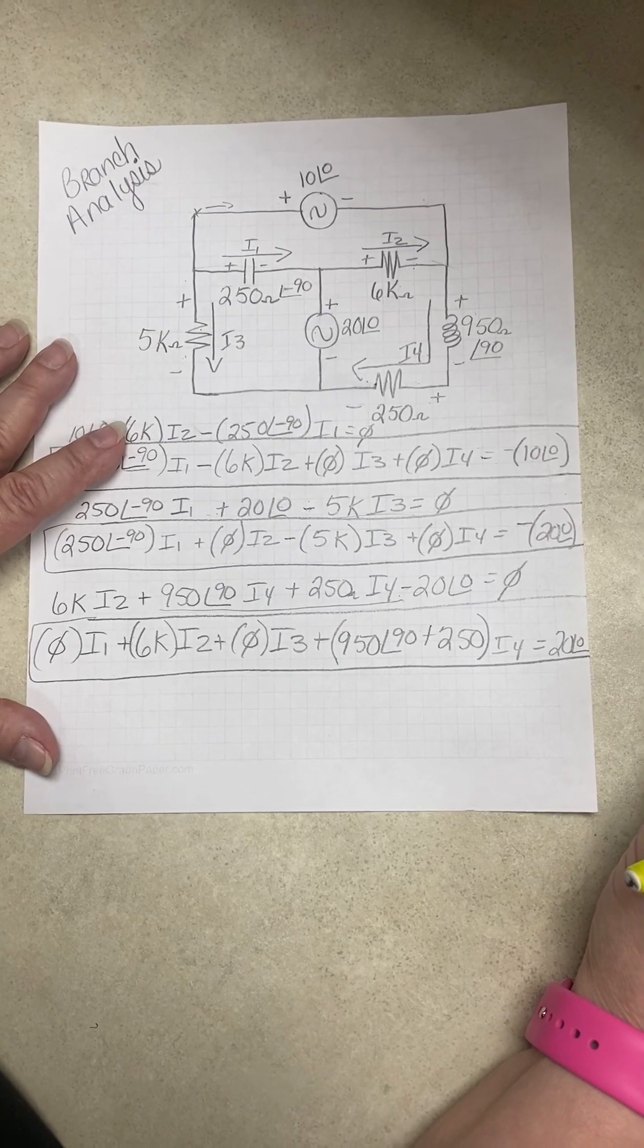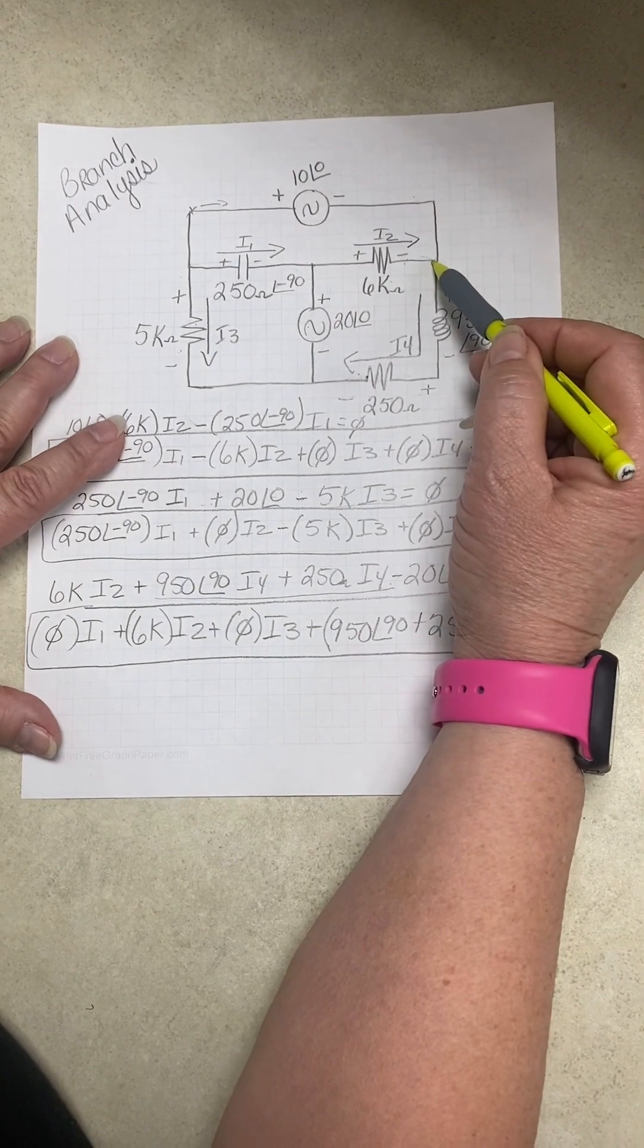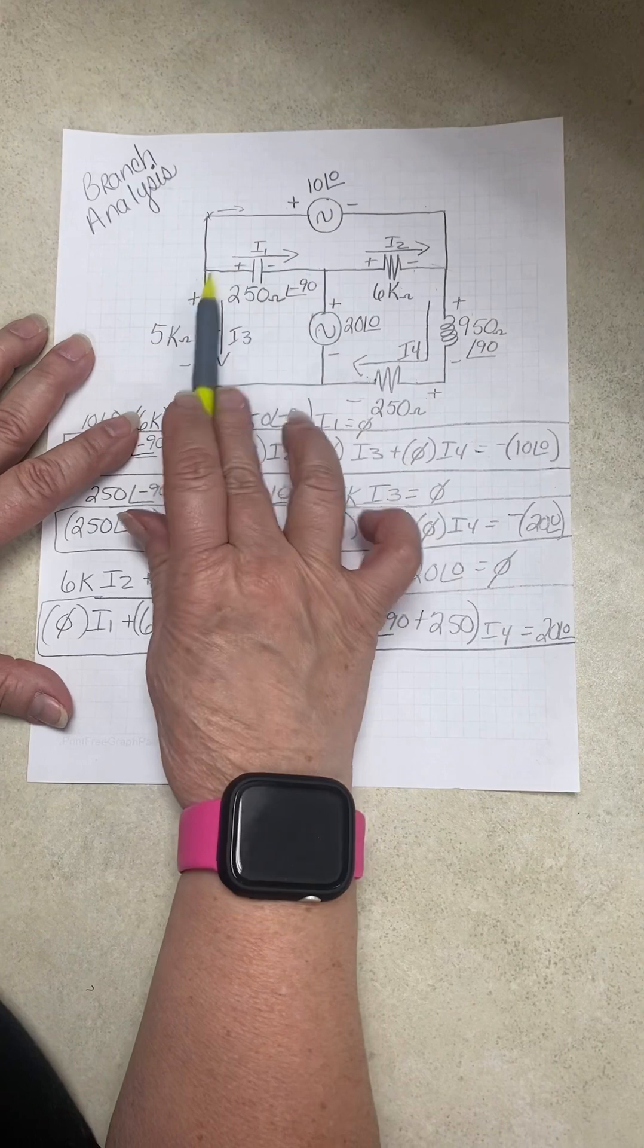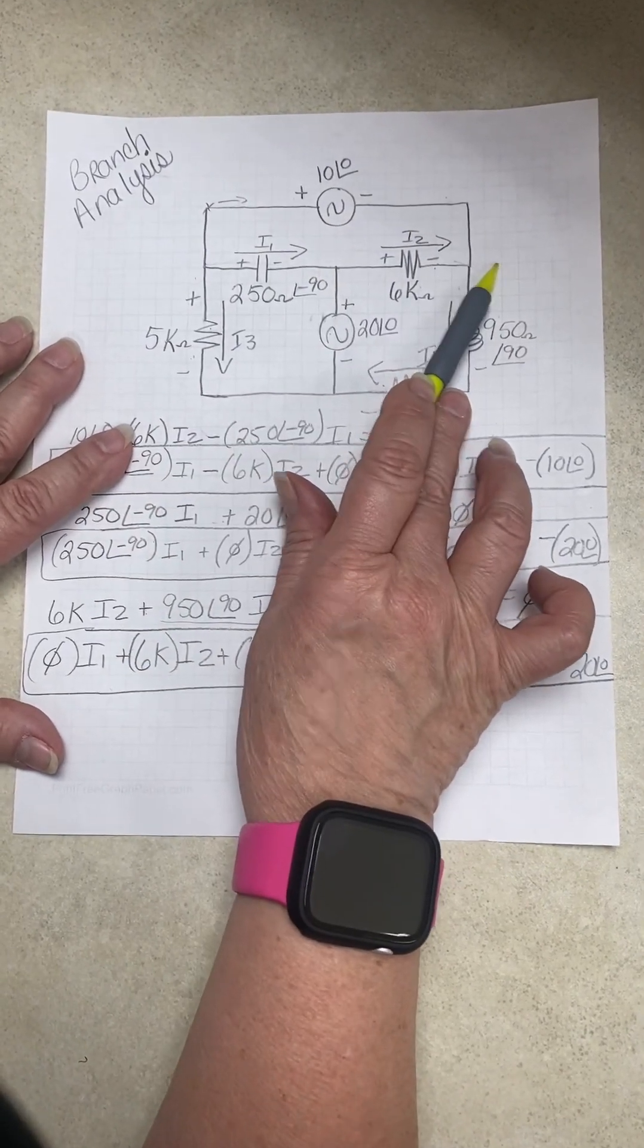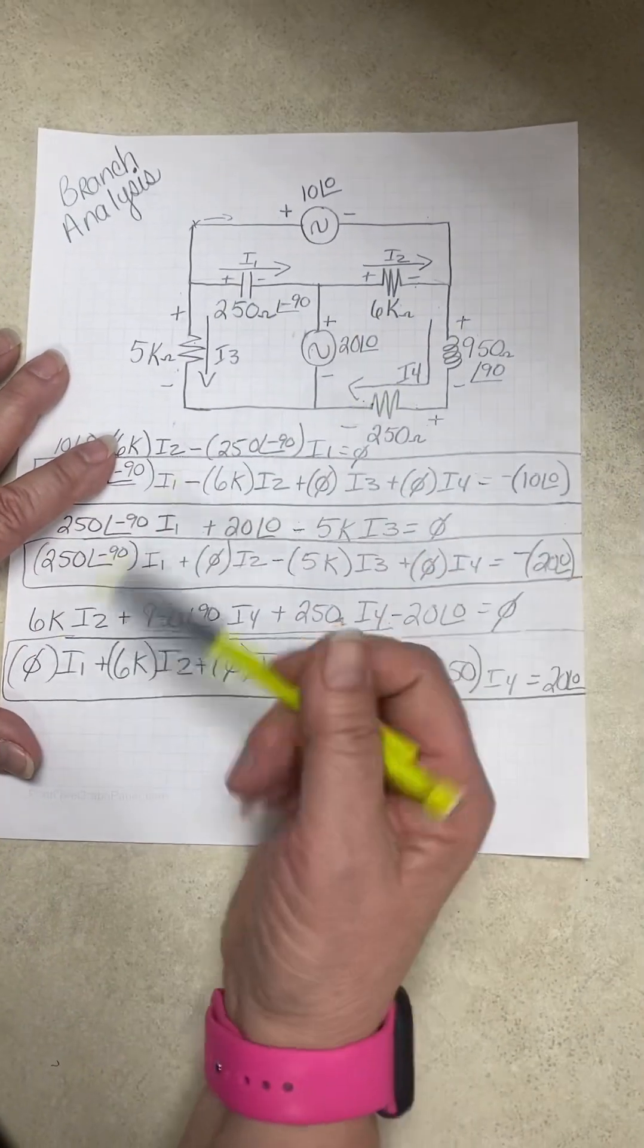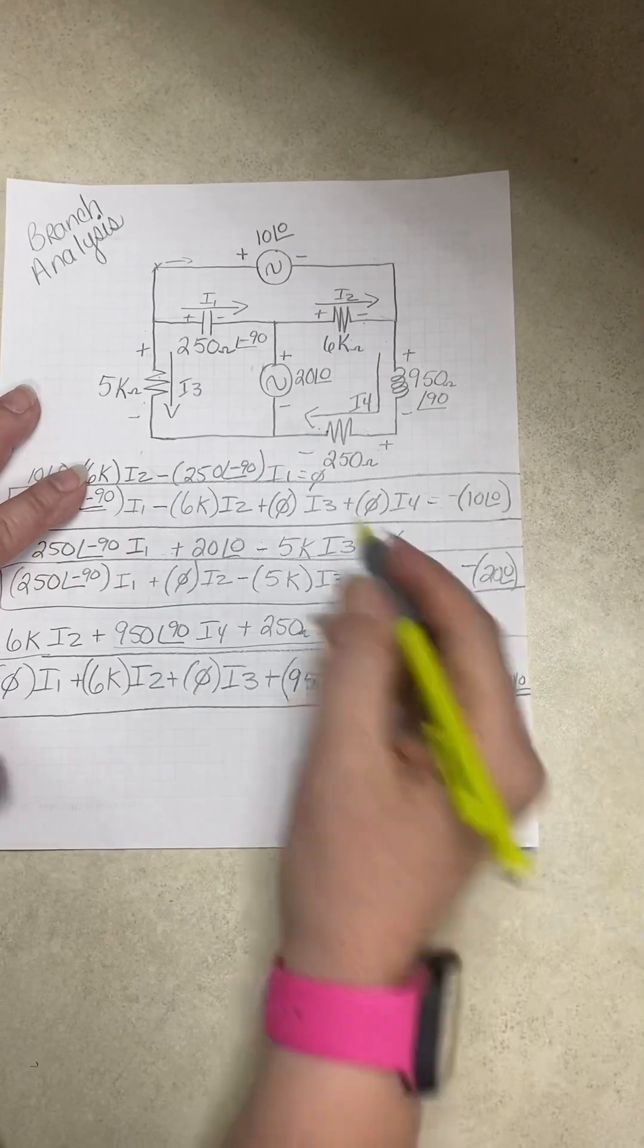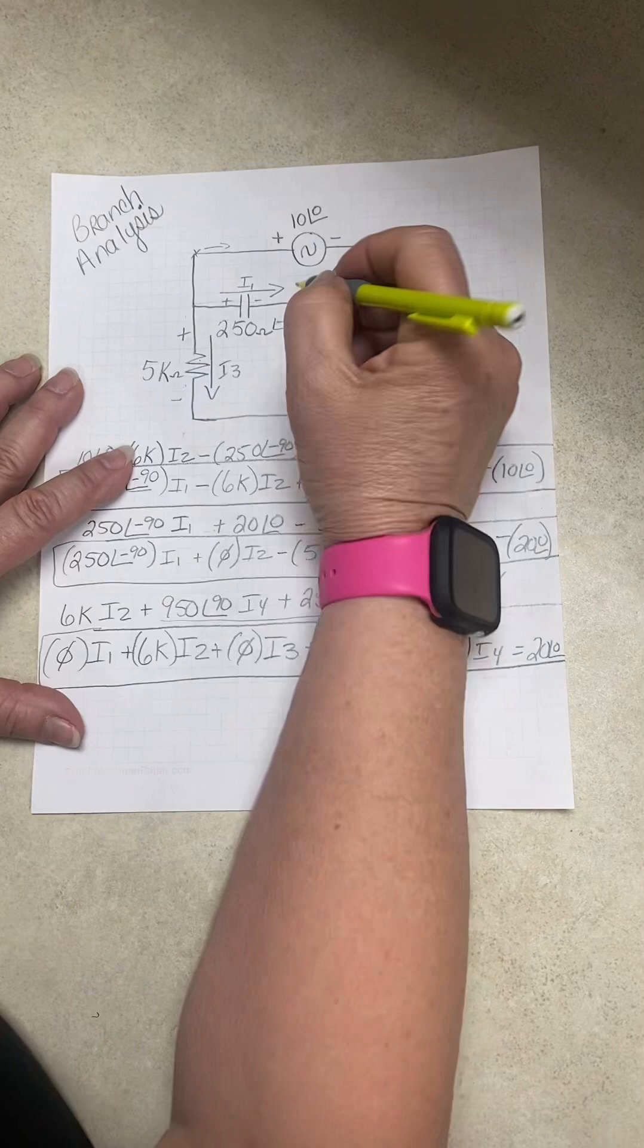Okay, so where should we do our KCL? Well, at this spot, we have I2 entering and I4 leaving. This spot, we have I1 entering and I2 leaving. This spot, we got I1 and I3 leaving and nothing entering. So really, we can do it at any spot. Let's do it here. KCL.